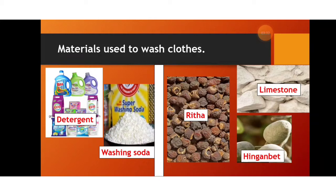Materials used to wash clothes include soap, liquid detergent, soda, and washing powder. There are many brands of different types of soaps available in the market. These are man-made materials. Rita is also a type of soap which is a natural soap — it is put in warm water and the water turns soapy.